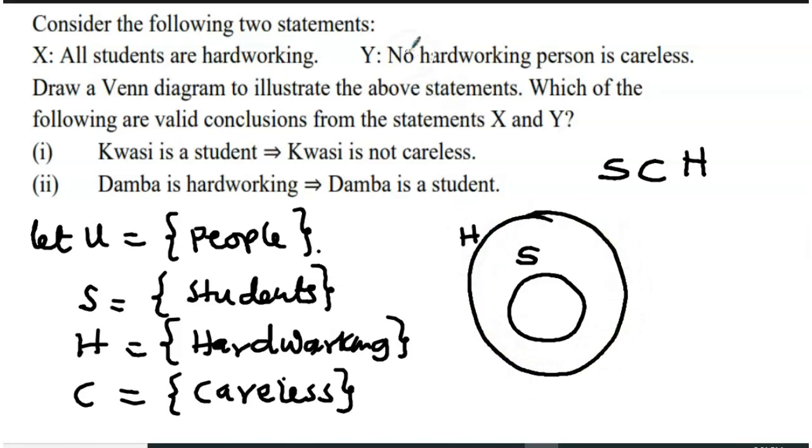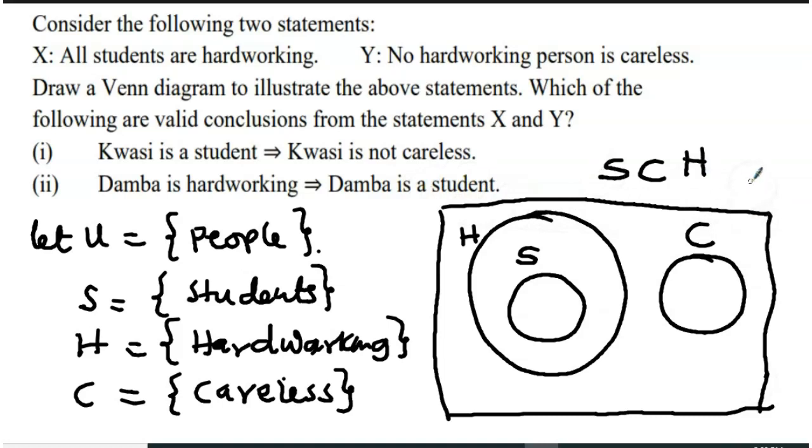Which is hardworking. And then no hardworking person is careless, so which means that for hardworking and careless, there is no intersection between them. They are disjoint sets. So this is a set of hardworking people. So careless is somewhere here. So we have a complete Venn diagram.